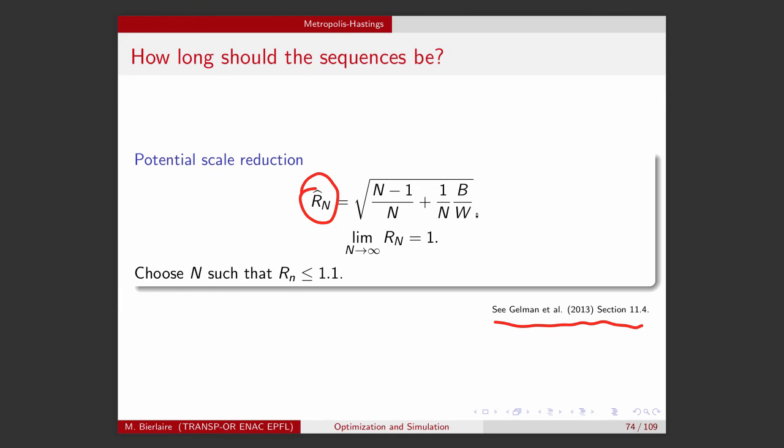And as a rule of thumb, you choose capital N, so the length of the sequences, such that this quantity is below 1.1, and then you are all set with stationarity and with the correlation.